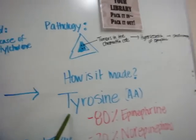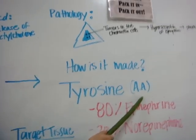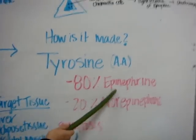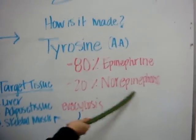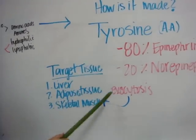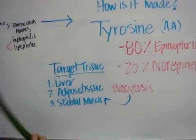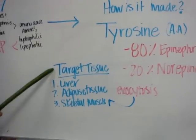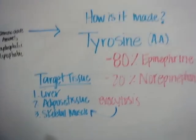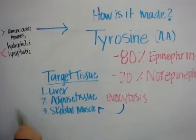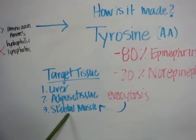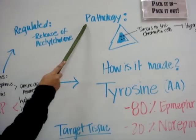Catecholamines are made from tyrosine, which is an amino acid. 80% is epinephrine and 20% is norepinephrine. They are released to the target tissue by exocytosis, and the target tissues are the liver, adipose tissue, and skeletal muscle. Make sure you go and read all the details described in the notes about that.